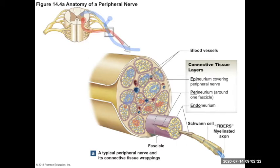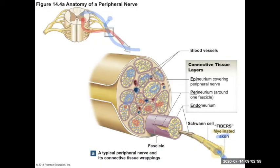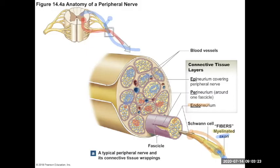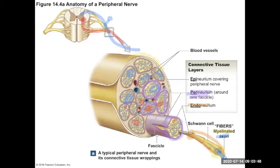Those afferent and efferent fibers are packaged into the nerve similarly to what we saw in the muscles. The fibers are the axons of the neurons. The myelin sheath, which covers the axon, is itself covered by a loose connective tissue called the endoneurium. A group of fibers is packaged into a fascicle by the perineurium. A group of fascicles is then grouped together by the epineurium, which covers the entire nerve. Blood vessels also run within the nerve, similar to what we saw in the muscles.